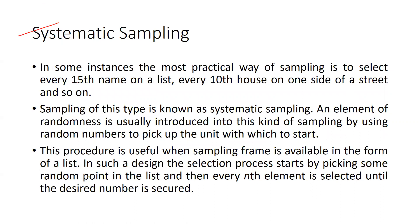In systematic sampling, the most practical way is to select every 15th name on a list, or every 10th house on one side of a street. For example, in a class of 60 students, I can select the 4th roll number and then jump every 10th number to select the next student. This develops a systematic method to select a sample, which is known as systematic sampling.